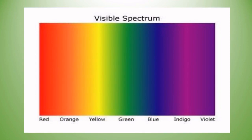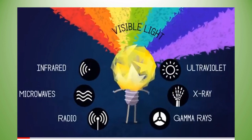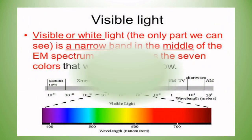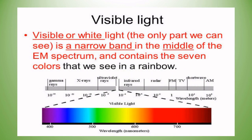Now let us see about the visible spectrum. Visible light is between ultraviolet and infrared. The visible light spectrum is the section of the electromagnetic radiation spectrum that is visible to the human eye. Visible light, or white light, is the only part we can see — a narrow band in the middle of the electromagnetic spectrum that contains the seven colors seen in a rainbow.